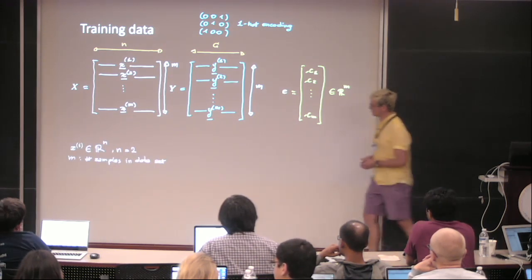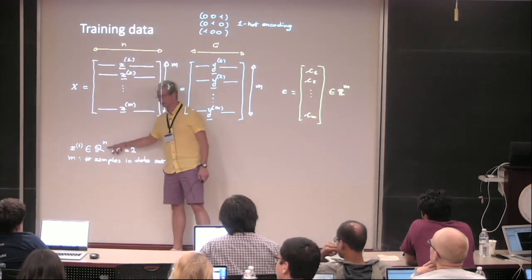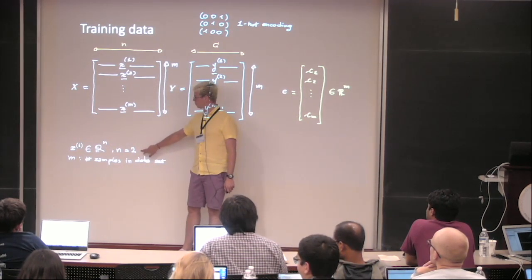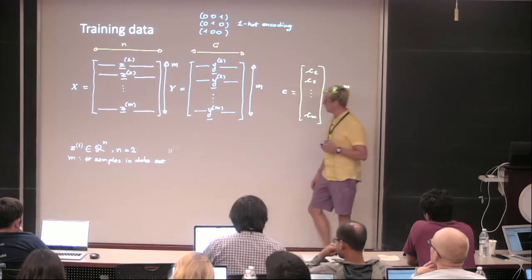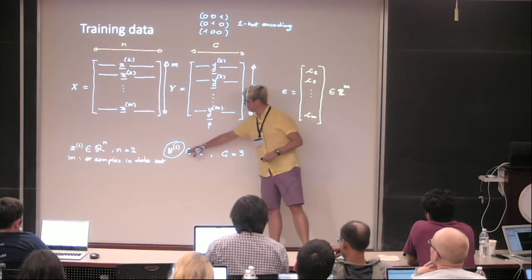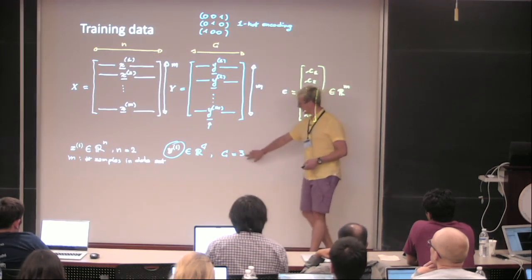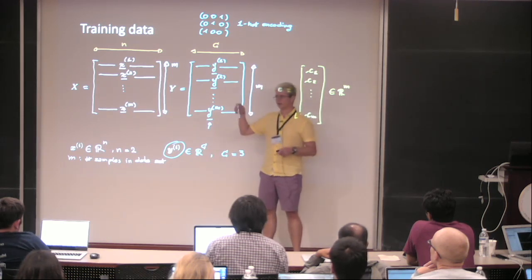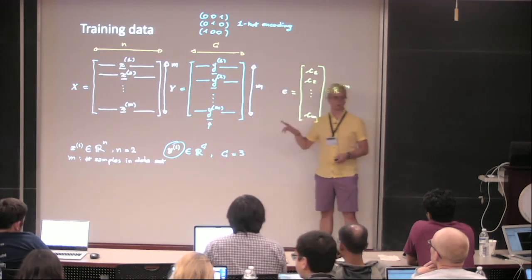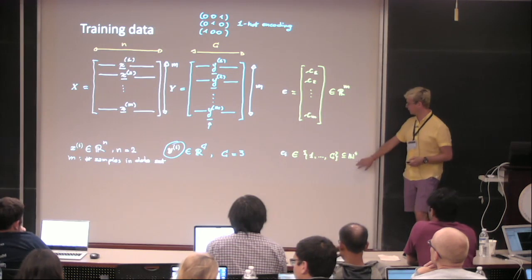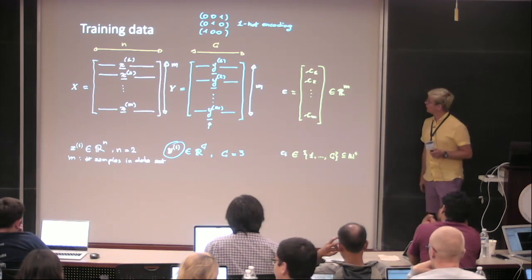So xi — my i-th sample — is simply a point in R^n. In our case n is 2 because it's a point in the plane. M is the number of samples in the dataset. My y is belonging to the set {0,1}^C, where capital C is the number of classes — in this case 3 because we have three spirals. And Ci is basically a number from 1 to capital C.